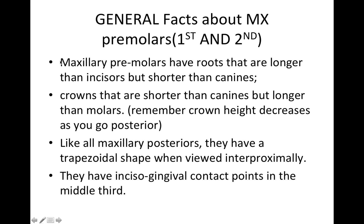The maxillary premolars have roots that are longer than the incisors but shorter than the canines — so the canines have longer roots. The crowns are shorter than canines but longer than the molars.